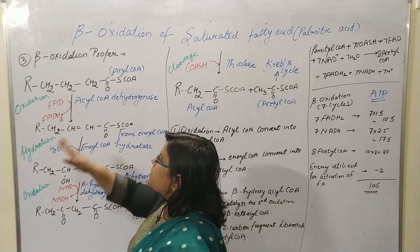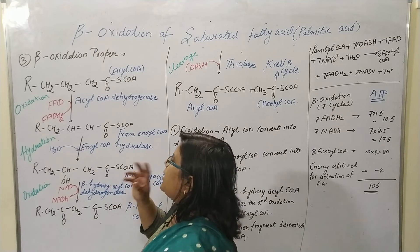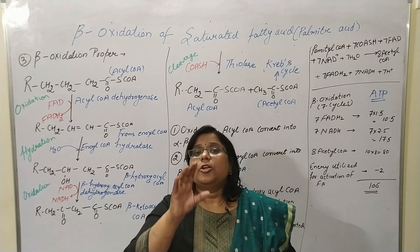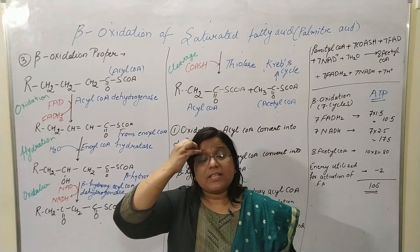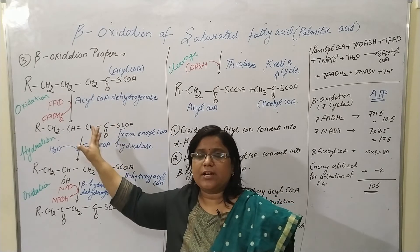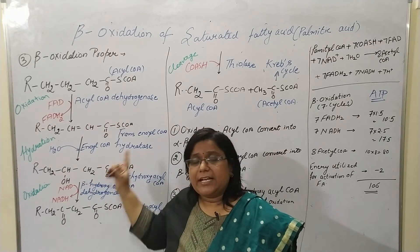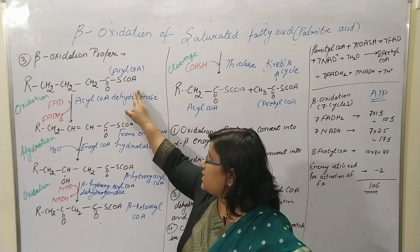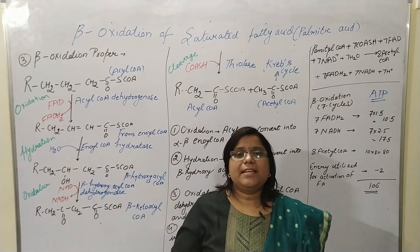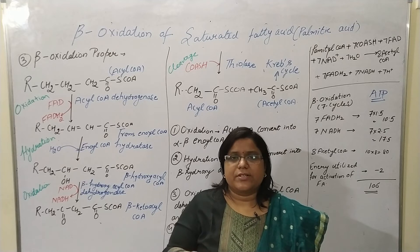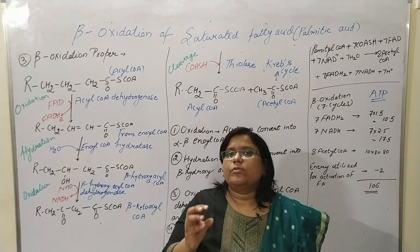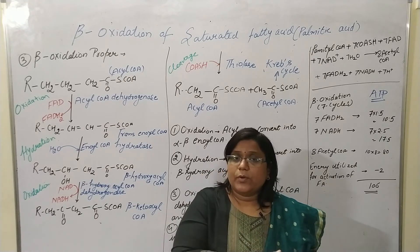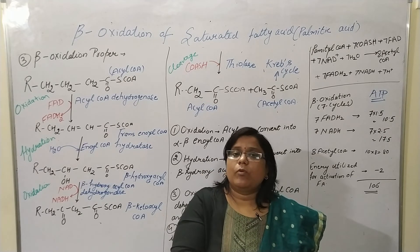In an examination, if they ask about beta oxidation, you should write from the first step — activation of fatty acid, then the carnitine system — and then come to the main pathway. Do not skip directly to the pathway, because you must explain to the examiner how the acyl coenzyme A reaches the mitochondrial matrix. That is your duty if you want full marks.